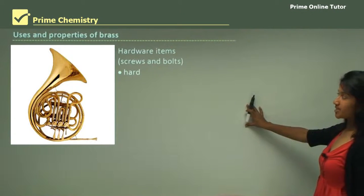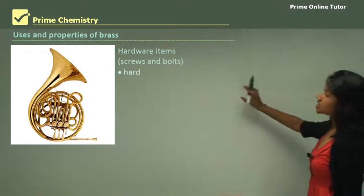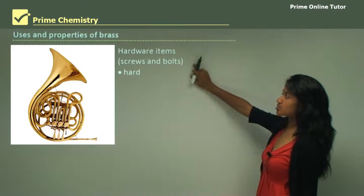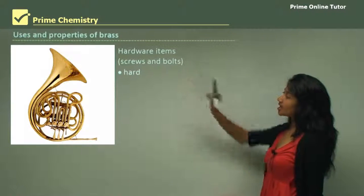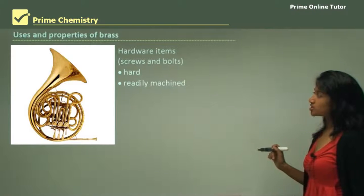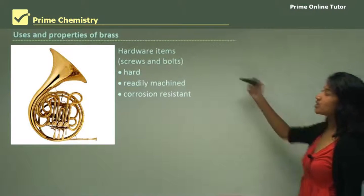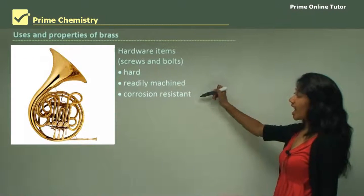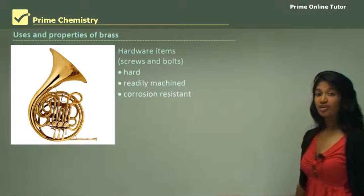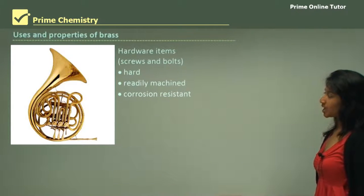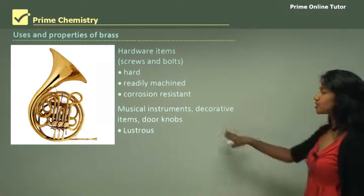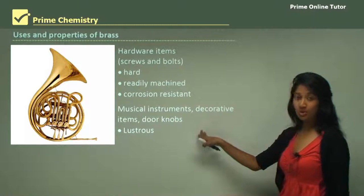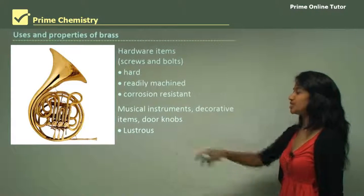Uses and properties of brass: brass is used for hardware items such as screws and bolts because it's hard, readily machined, and corrosion resistant. It is also used for musical instruments, decorative items, and doorknobs due to its luster.